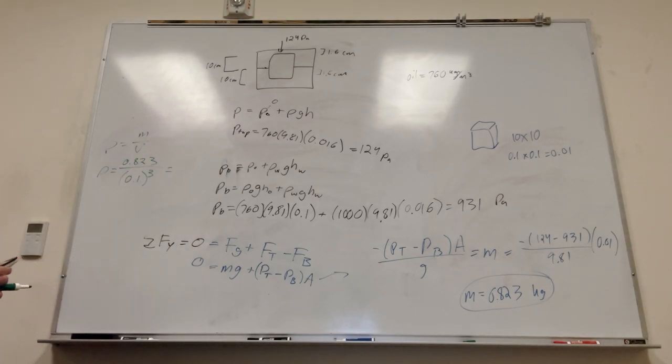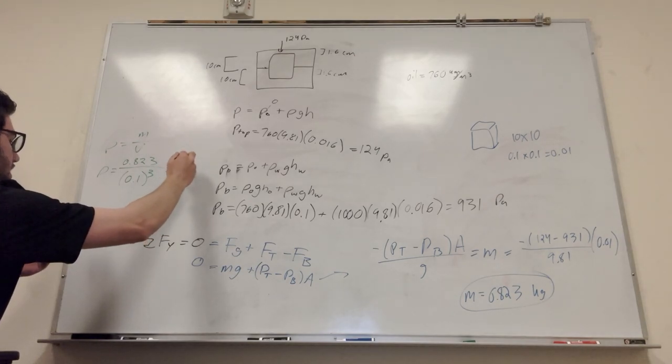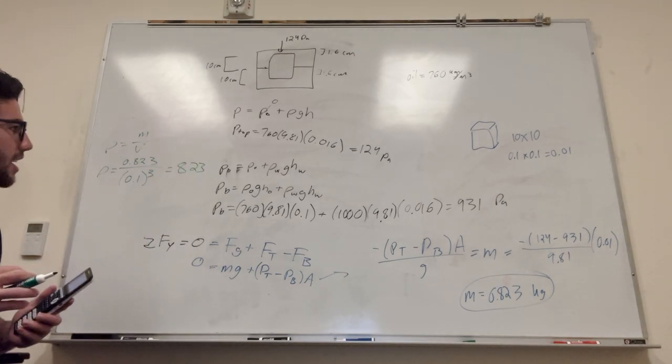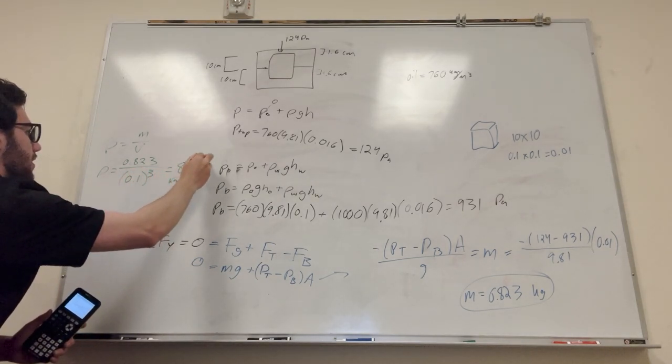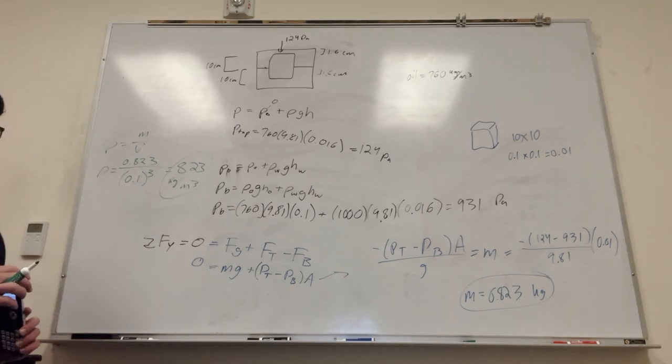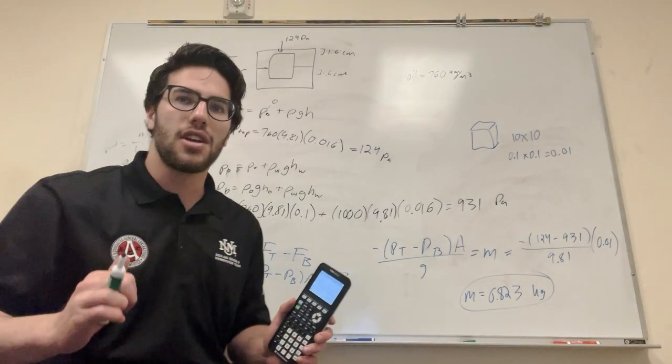So you do this, divided by 0.1 cubed. And you get, density is 823. This is kilograms per meter cubed. Okay. And there you go. That's how you find density. So that's how you solve this problem.